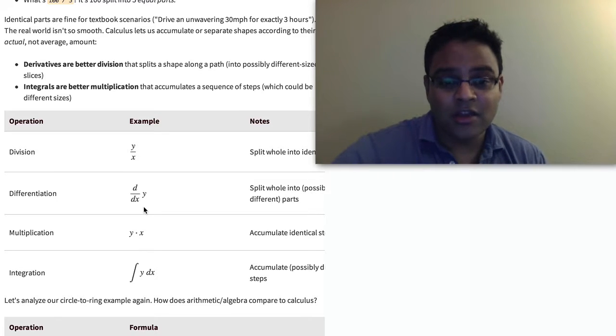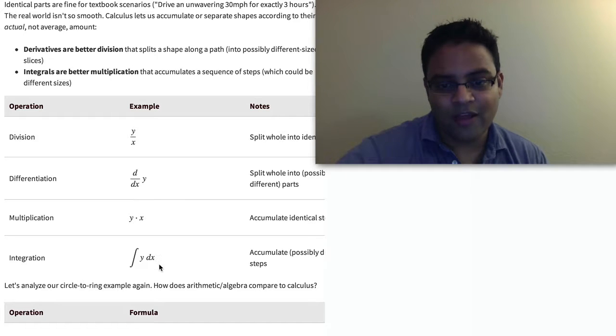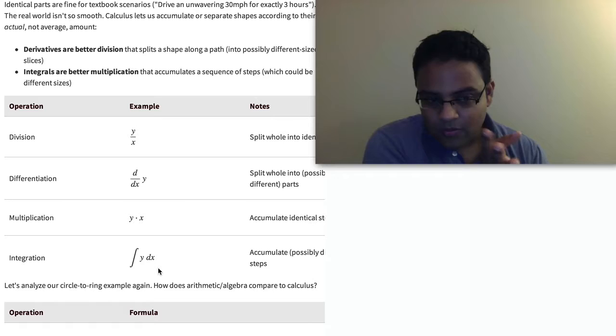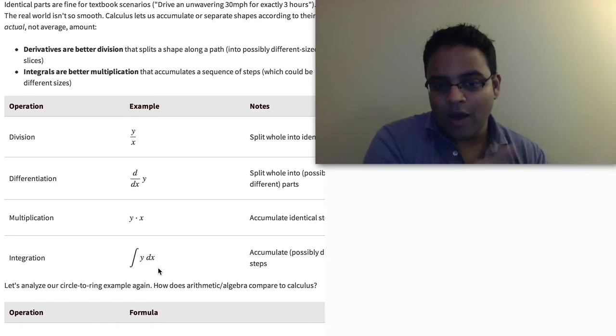Similarly, for multiplication, we might have y times x, which means we're taking x-identical steps. But if you want to integrate, we might have the integral of y with respect to x. That means we're going to be adding up y as we move along x, the pieces of y that come along, and those pieces don't have to be the same.